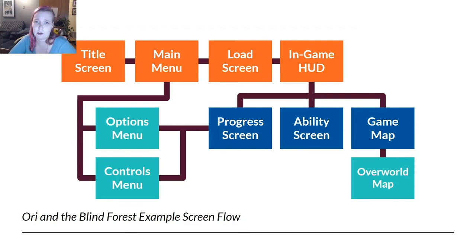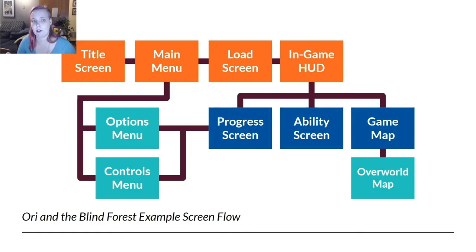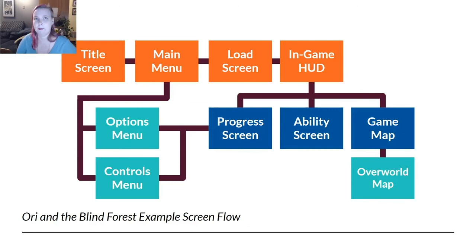Returning to the screen flow diagram, we can now make better sense of what's being communicated. The flow to get into the game is: title screen → main menu → load screen → in-game HUD. From the in-game screen, the player can access the progress/pause screen, the ability screen, or the game map which zooms out to show the overworld. Options and controls can be accessed from both the main menu and the progress screen. Your screen flow might not be this complex, but at minimum you'll likely have a title screen, a main menu, an in-game HUD, an options menu, and probably some kind of win/lose screen — though it depends on your genre. A game like Ori doesn't really have a game over screen because it just fades you back to your last checkpoint when you die.